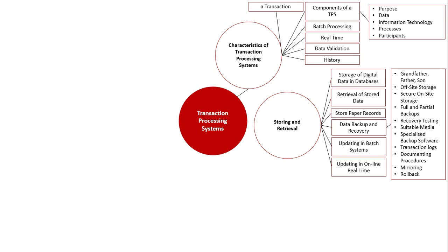Transaction logs are used for keeping a record of when a system is backed up, and can also be used when conducting a rollback — basically undoing data when it has been entered incorrectly. Documenting procedures means recording when backups or restores were done, so we have a history to trace back if any issue occurs. Mirroring involves writing data simultaneously to multiple hard drives. Rollback is used in conjunction with transaction logs.